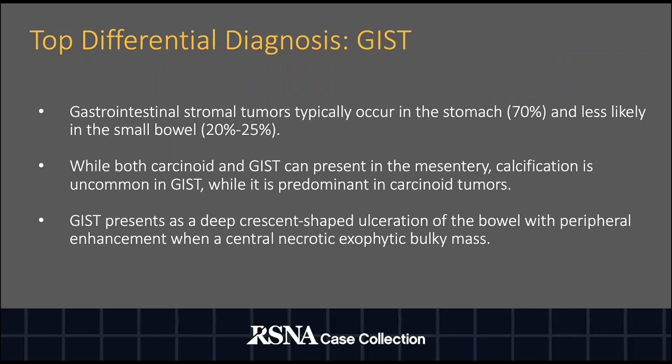Unlike carcinoid tumors, gastrointestinal stromal tumors typically occur in the stomach and less likely in the small bowel. While both carcinoid and GIST are known to present in the mesentery, calcification is very uncommon in GIST. Additionally, GIST presents as a deep crescent-shaped ulceration of the bowel with peripheral enhancement due to having a central necrotic exophytic bulky mass.